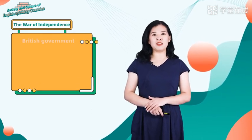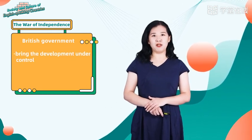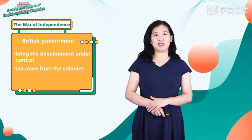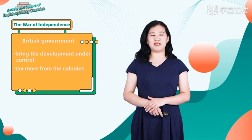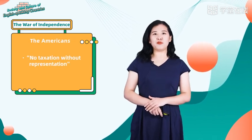The economy in the 13 colonies developed very fast. And with the development of the economy, the people in the colonies wanted more power to determine their own business. But the policies of the British government were to bring the development under control and to tax more from the colonies. The Americans opposed the unfair treatment.